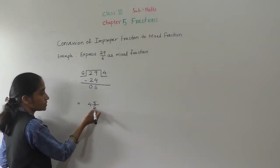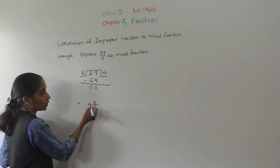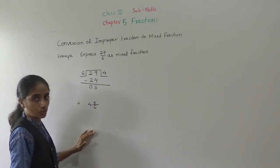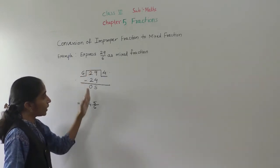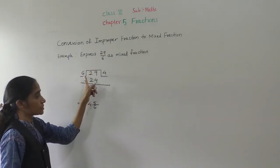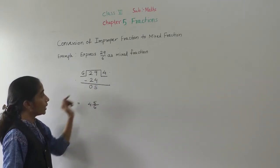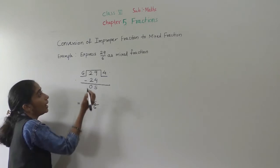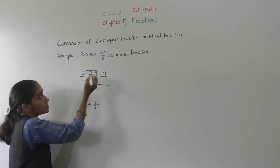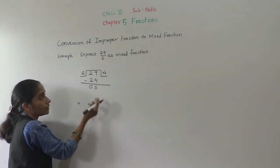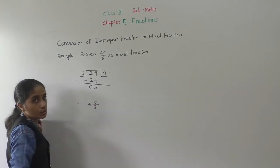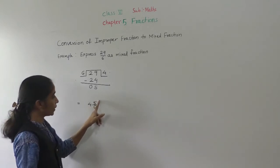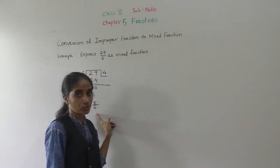You can verify: 6 fours are 24, plus 5 is 29 — 29 upon 6. So to convert, divide the improper fraction, write the quotient as the whole number part, the remainder as the numerator, and the denominator as it is. So 4 and 5 upon 6 is the mixed fraction.